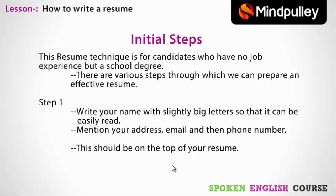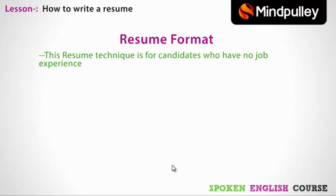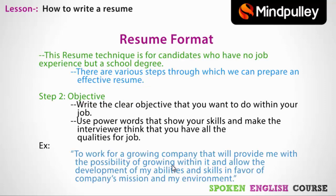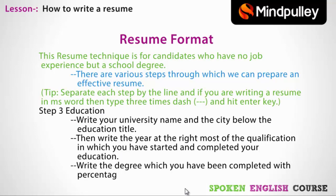Step number two: write your objective — what you want to do within your job. Use power words that show your skills and make the interviewer think that you have all the qualities for the job. For example, you can write: 'To work for a growing company that will provide me with the possibility of growing within it and allow the development of my abilities and skills in line with the company's mission.' If you are typing your resume in Microsoft Word, type three dashes and hit the Enter key to create a dividing line.